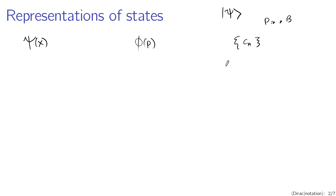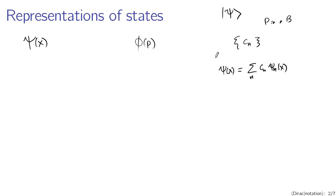The superposition of stationary states can be easily used to construct psi of x as a sum over n of c sub n psi sub n of x. These are the stationary state solutions, multiplied by a coefficient, and superposed together to give the overall wave function. That's going from one representation to another.